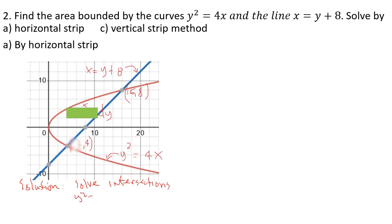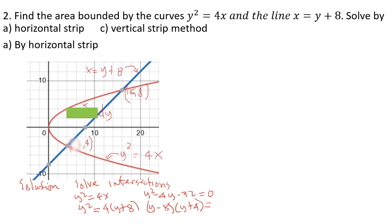From y² = 4x and x = y + 8, substituting gives y² = 4(y + 8), so y² − 4y − 32 = 0, which factors as (y − 8)(y + 4) = 0. Therefore y = 8 and y = −4.